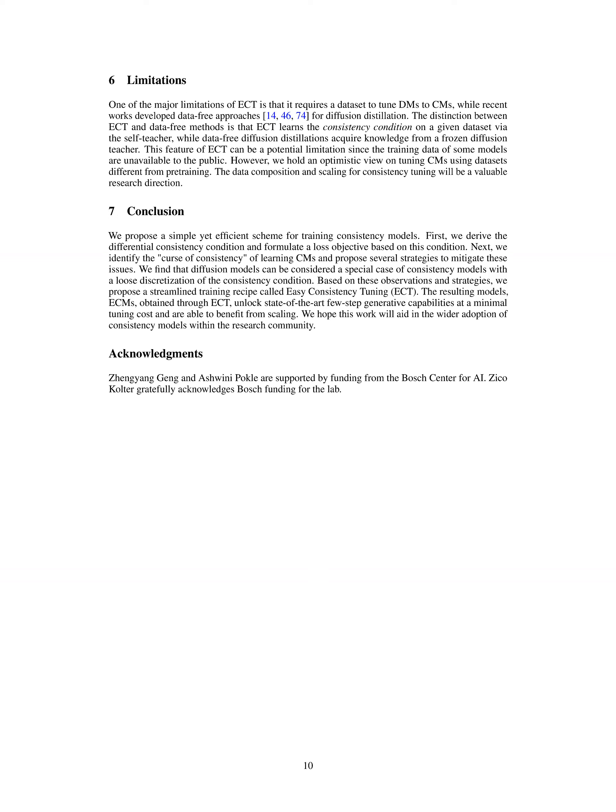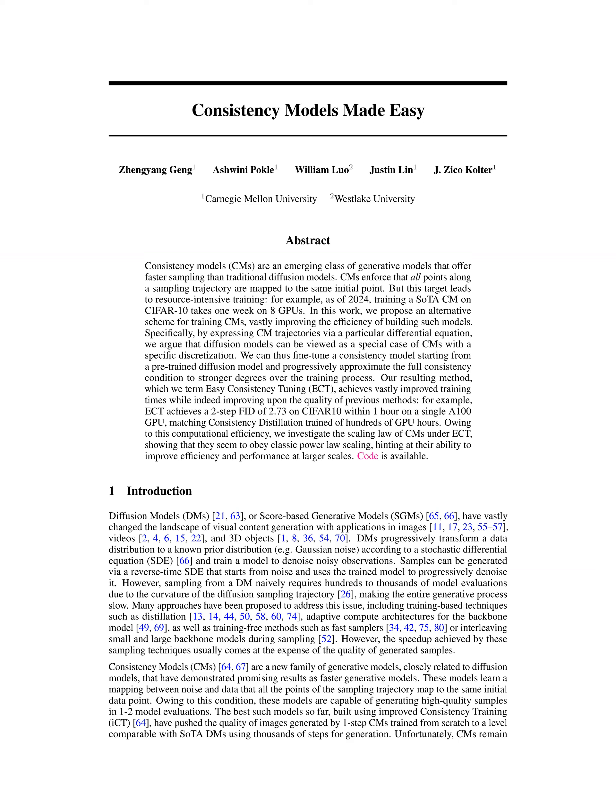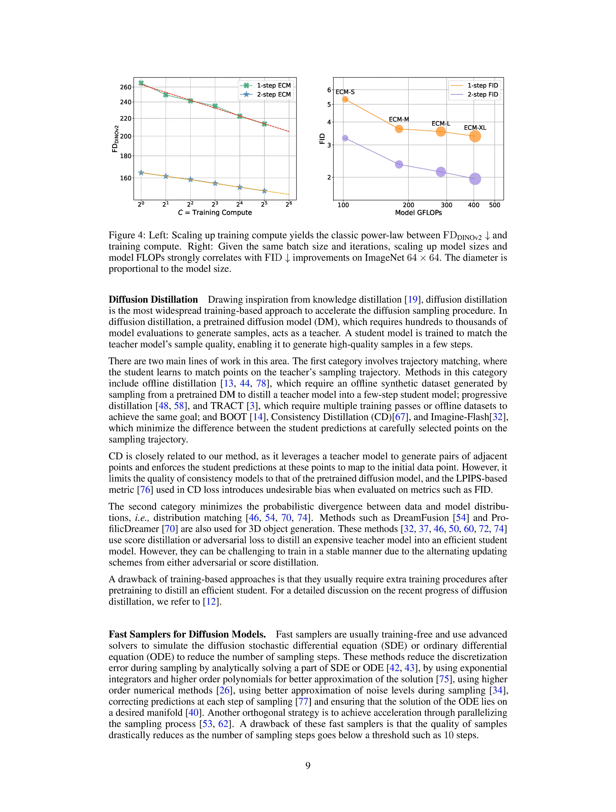ECT provides a more efficient scheme for building CMs by introducing a differential consistency condition and a streamlined training recipe. It aims to decrease the training cost significantly, making CMs more accessible and reducing the computational resources required for training. ECT allows for the generation of high-quality samples in one to two model evaluations, competing with state-of-the-art diffusion models while using a fraction of the training flops. In essence, ECT aims to streamline the training process of CMs, making them more practical and efficient for generating high-quality samples in a few steps.